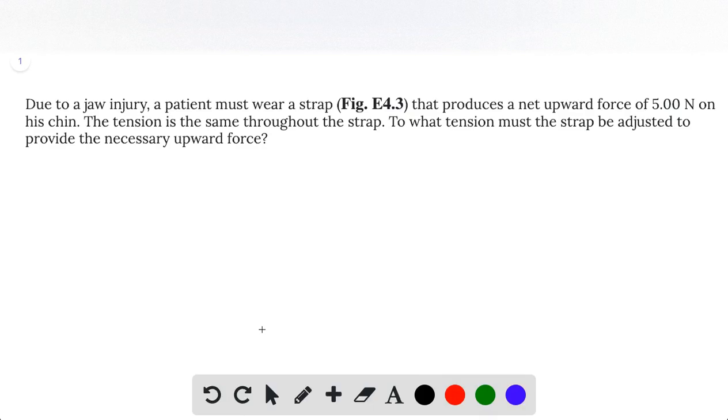Okay, so this is another two-dimensional vector decomposition problem and I will try my best to redraw the diagram, the figure that's given in the textbook E4.3. Basically what's going on is that we have a patient wearing a chin strap that looks a little something like this, so it's pulling on him in these two diagonal directions.